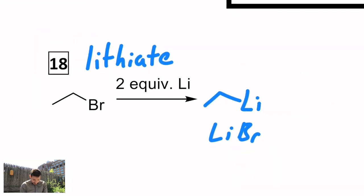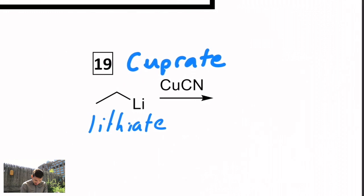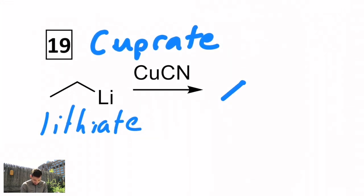And the third one is called a cuprate. A cuprate actually starts with a lithiate. So I am using what I just made to make a cuprate. Cuprates are a little bit more mild than Grignards and lithiates. It's actually two equivalents of the organo species that ends up getting attached to the copper.